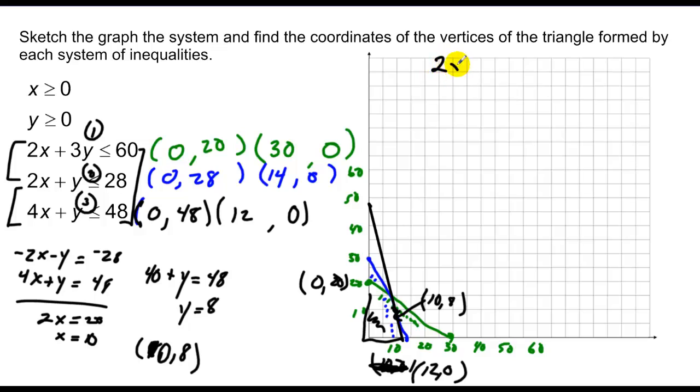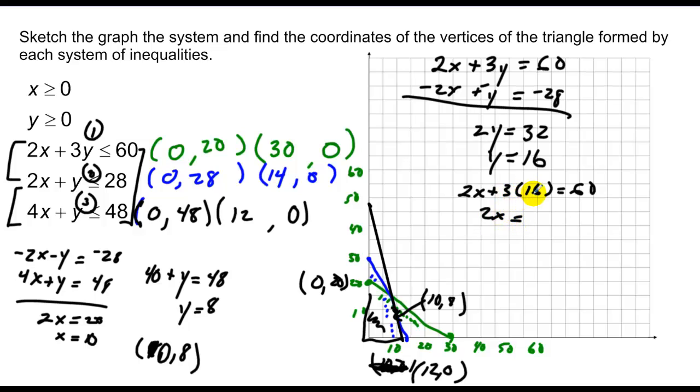In this case, I'm going to keep the top equation the same. Multiply the bottom equation by negative 1. Add. We get 0, 2y is equal to 32. Y is equal to 16. If y is equal to 16, I can plug back in. I have 2x plus 3 times 16 is 60. 2x equals, this is 48, bring that over, it's 12 and x equals 6.